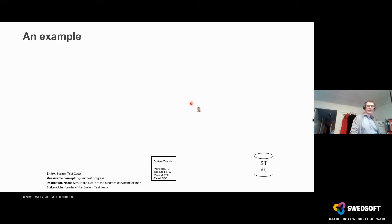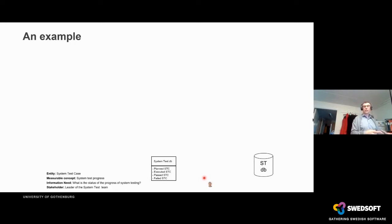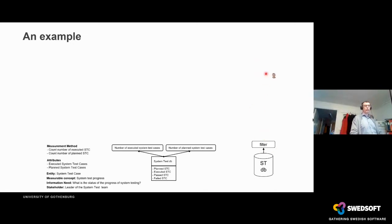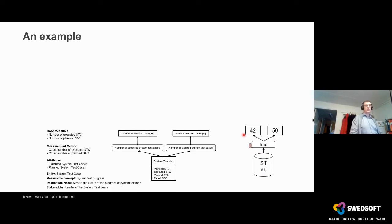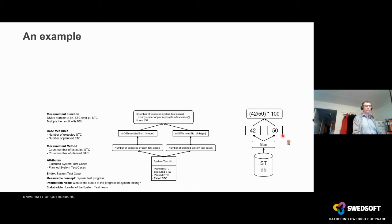Let's take a very simple example to understand the basic concepts of the measurement system. Back in the day, I had a leader of a system test team who wanted to know the progress of his team's testing. He defined that as the quotient of executed system test cases over the planned ones. I accessed the system test database, got the executed and planned test cases, and performed a simple calculation.